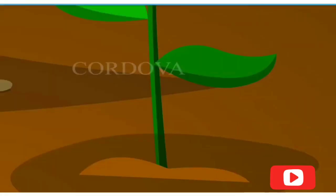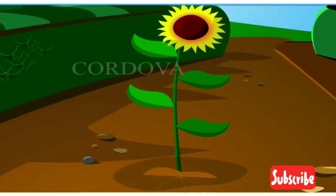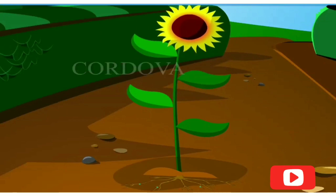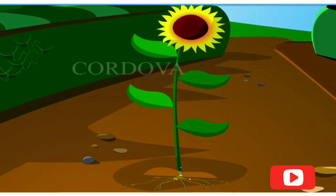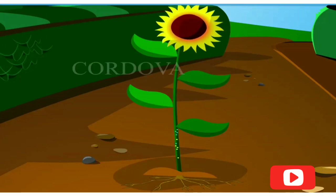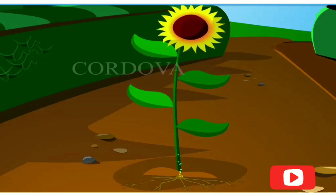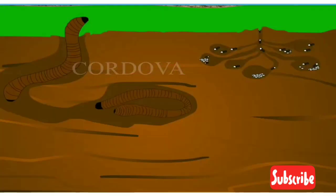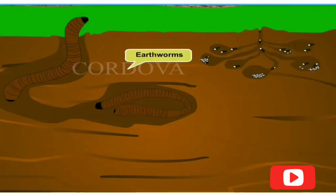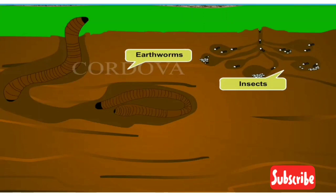Soil is the uppermost layer of the earth. Soil is very important for plants to grow. Roots of plants go into the soil to get water and minerals. It helps them to grow well. Small animals like insects and earthworms live in soil.